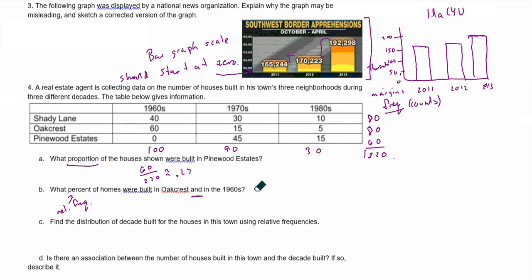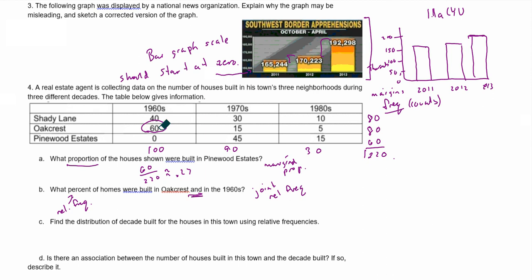Since we have an 'and' condition here — Oak Crest AND 1960 — this is known as a joint relative frequency. The previous one was a marginal frequency, or marginal proportion. For Oak Crest and 1960, we're looking at 60 divided by 220, which equals approximately the same percent as before — about 27%.